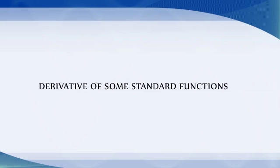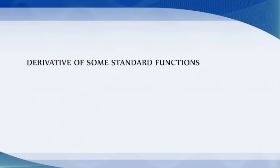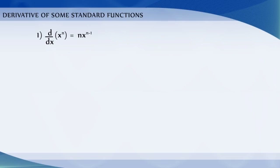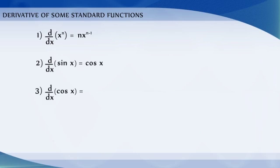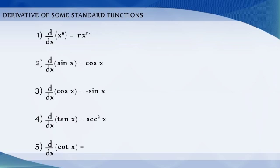Derivatives of some standard functions. The derivative of x raised to the power n is n multiplied by x to the power n minus 1. The derivative of sin x is cos x, and the derivative of cos x is negative sin x. The derivative of tan x is sec squared x, and the derivative of cot x is minus cosec squared x.